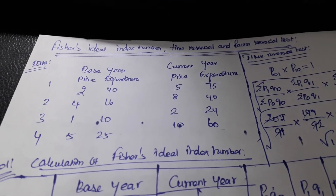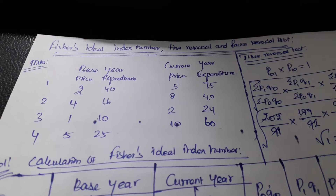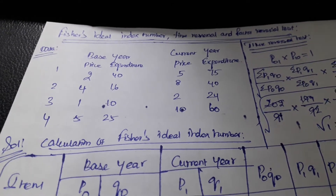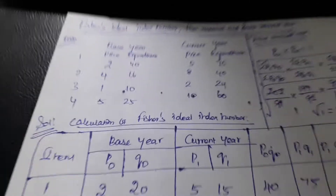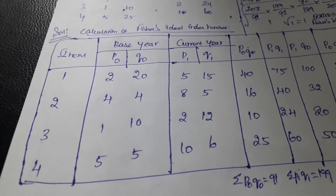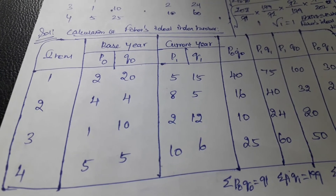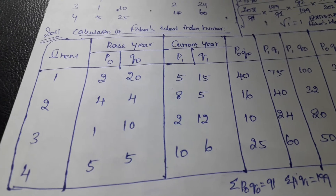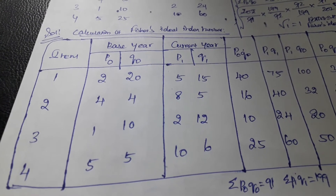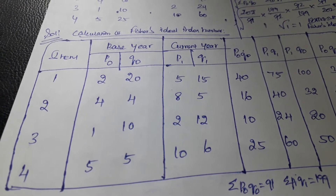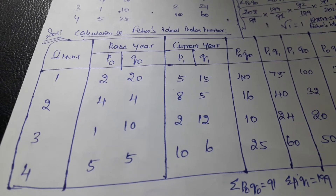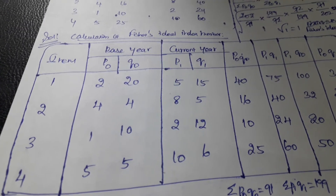Data is given through which we need to calculate Fisher's Ideal Index Number. The first column should be the item, followed by P0, which is the base year price, and Q0, which is the base year quantity. However, in this problem only price and expenditure are given, not quantity.